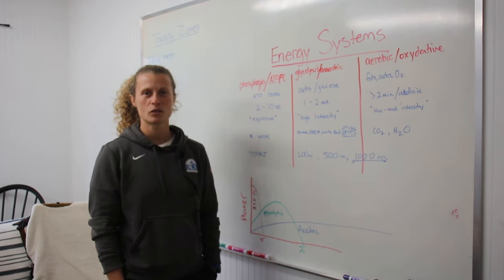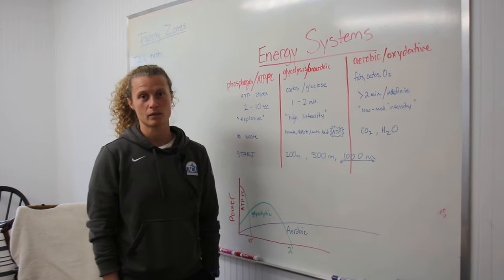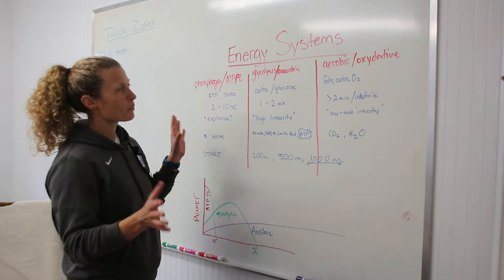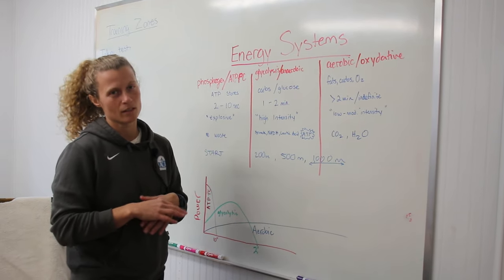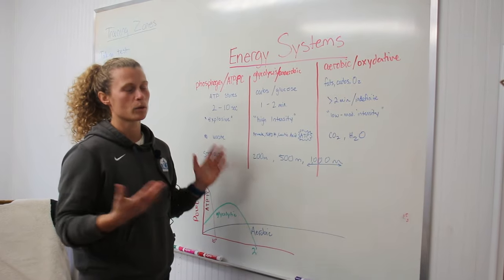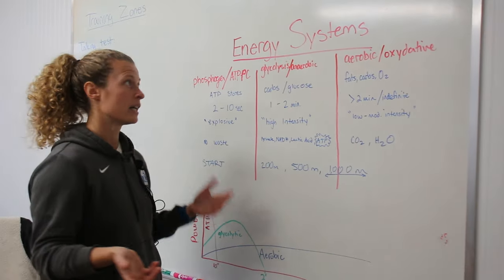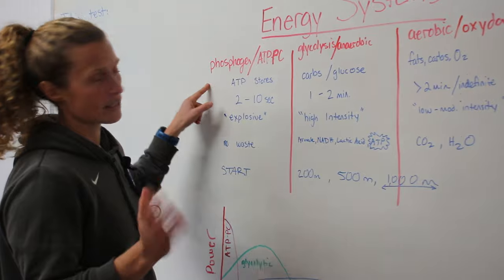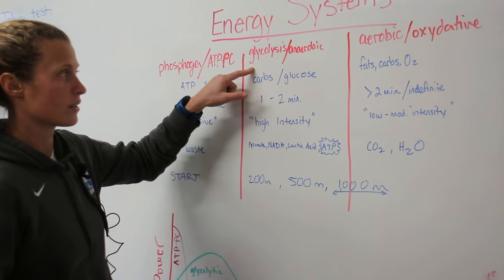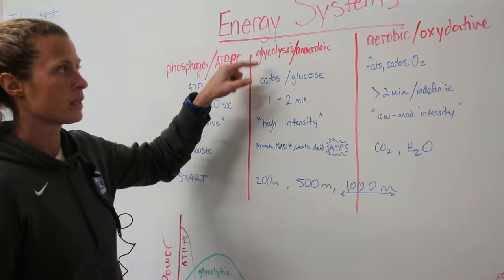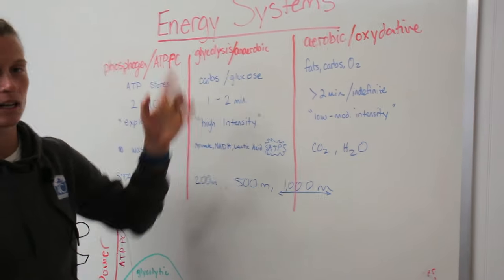Before we get into the individual zones, we're going to talk about the energy systems of the body. There's some people that will add on a few systems and get super specific, but we're just going to stick with the simple three. We have the phosphagen or the ATP-PC system, we have the glycolysis or the anaerobic system, and then we have the aerobic and oxidative system.